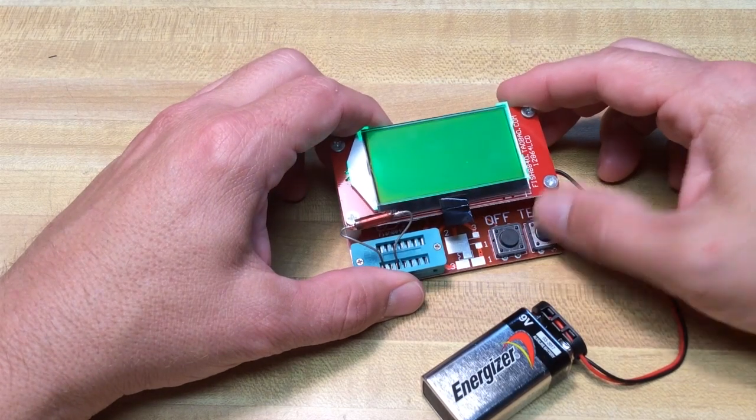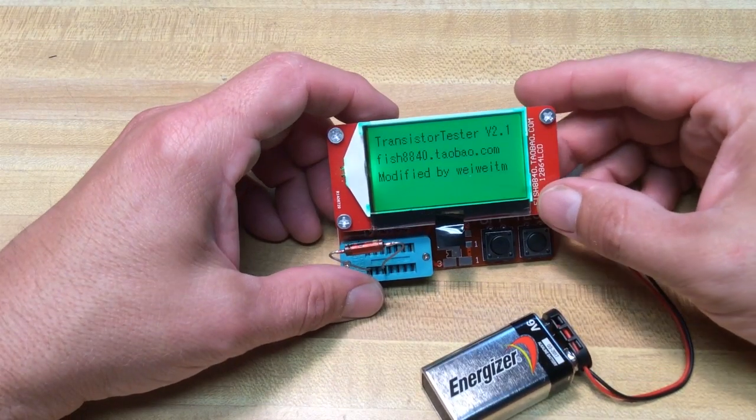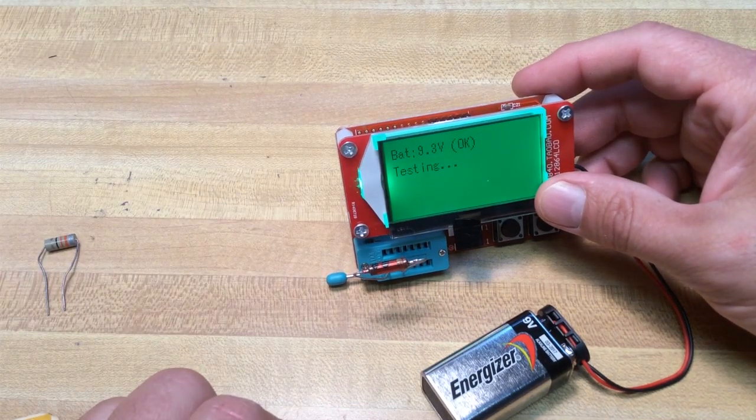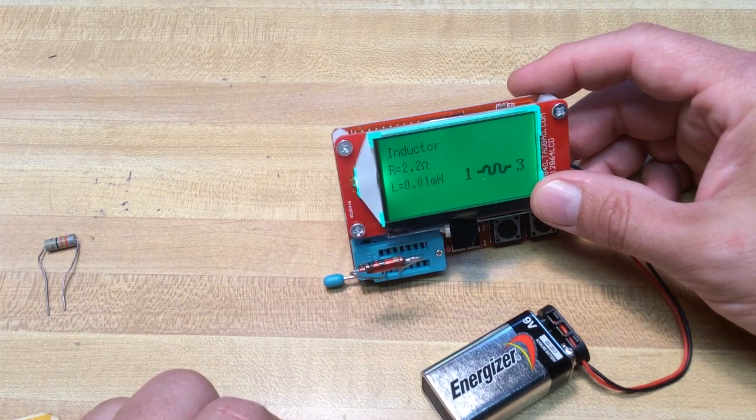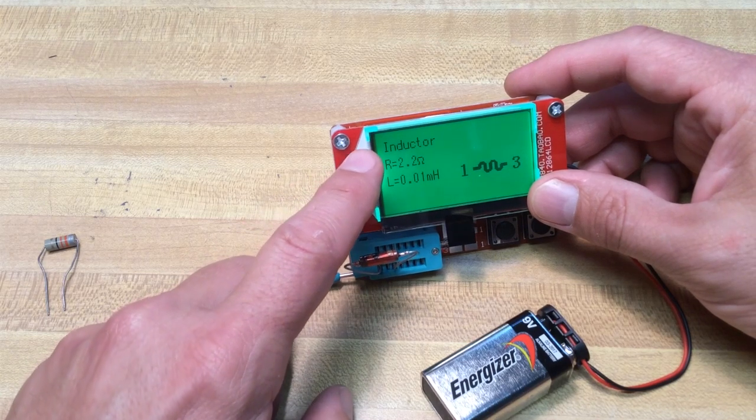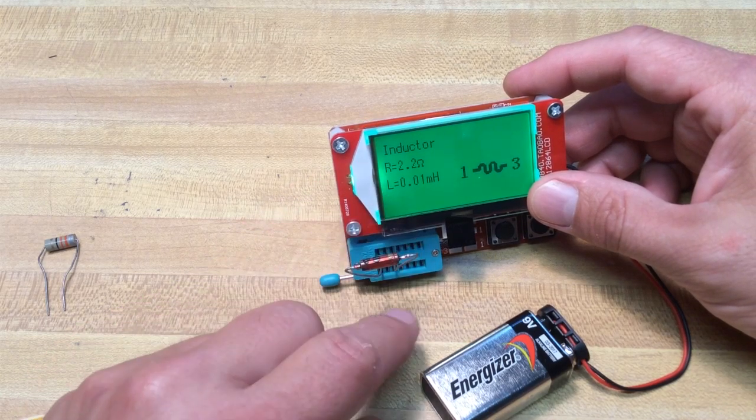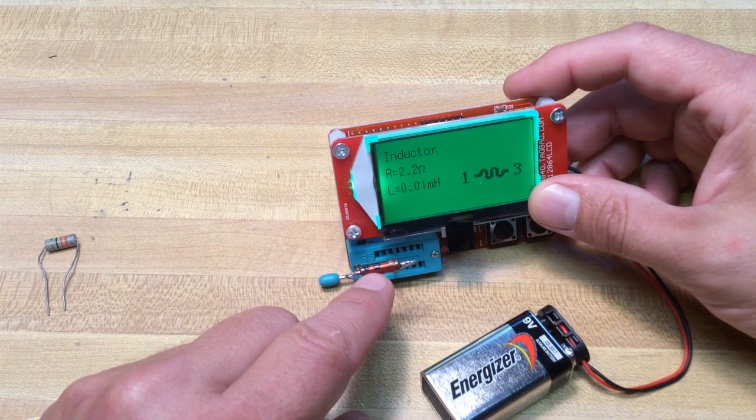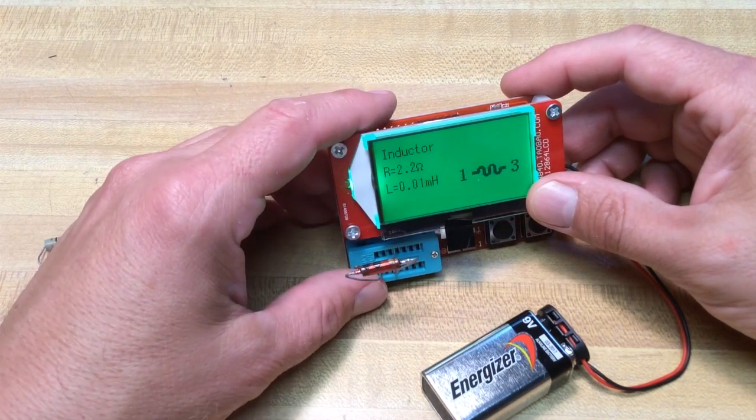Now we'll try an inductor, which is basically a little coil of wire. Let's see what this inductor shows. It's testing. It'll show me resistance of 2.2 ohms, and it is a .01 millihenry inductor. It shows the diagram between pins 1 and 3. Looks good to me.